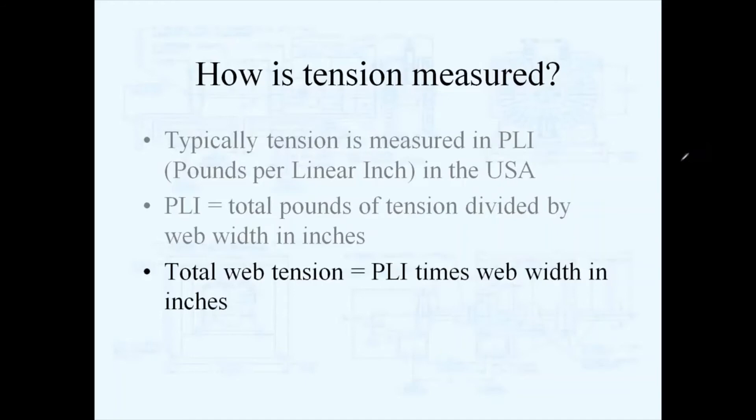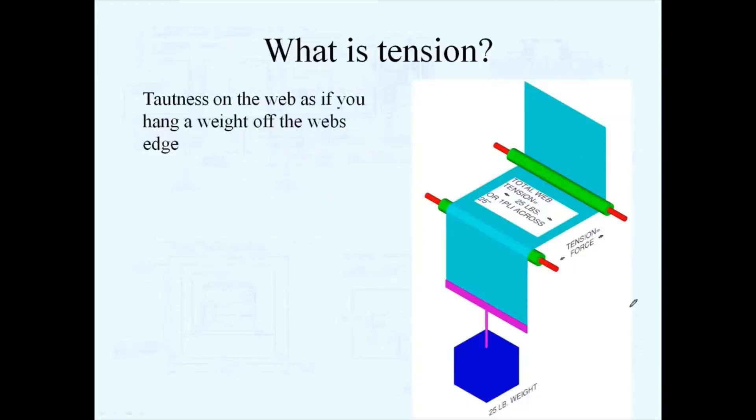In our simple example, if you had a 25 pound weight hanging off of, let's say, a 25 inch wide web, that would actually equal one PLI. Another simple way to look at it is if this was a 50 inch wide web, the tension would actually be a half PLI.